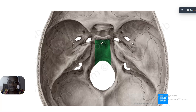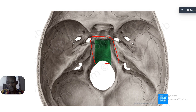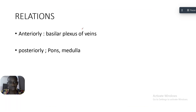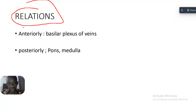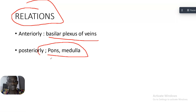Here is another image showing the clivus — it is simply a sloping area in front of the foramen magnum. Regarding its relations: anteriorly, the clivus is related to the basilar plexus of veins, and posteriorly it is related to the pons and medulla.